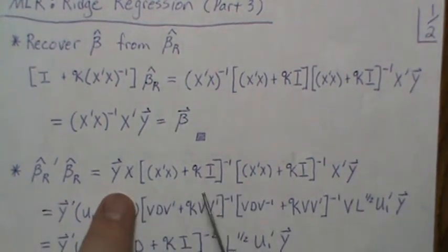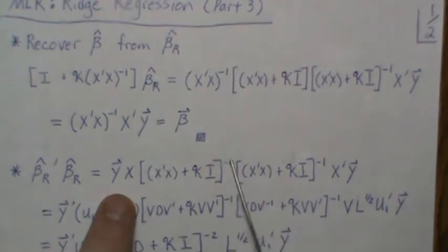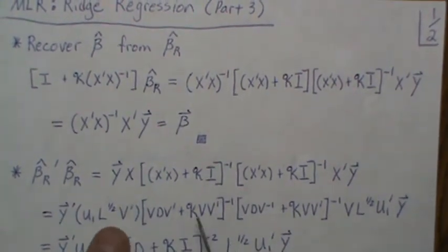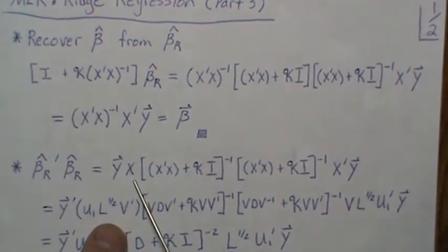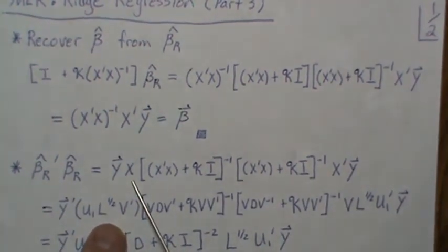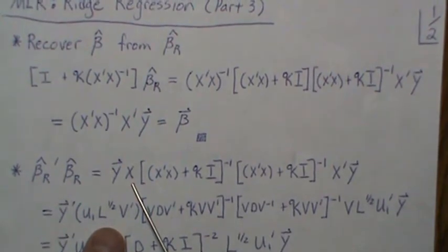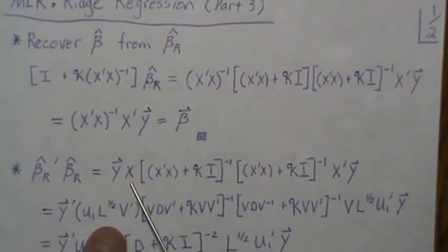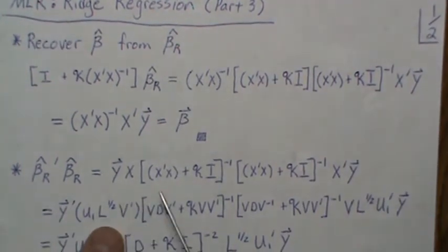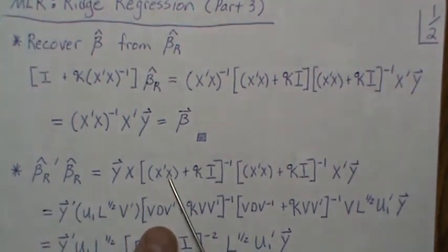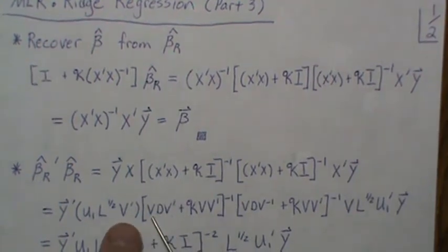This is just the original ridge estimator, right? This has been transposed, this is a symmetric matrix, so we don't need an extra tick. Now let's plug in the singular value decomposition here. I have a video covering that in video 56 on canonical form.